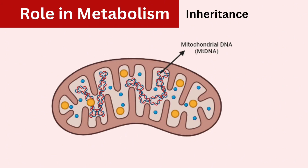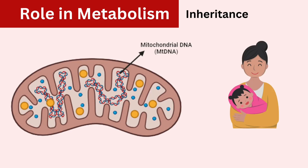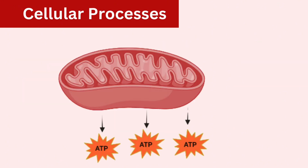Mitochondria have their own DNA, called mitochondrial DNA, that is separate from the cell's nuclear DNA. In many organisms, including humans, mitochondrial DNA is inherited exclusively from the mother.